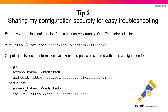The second tip is how to extract your running configuration from a given host running the OpenTelemetry collector. We can use a curl command, and the great thing is that it redacts secure information like tokens and passwords, in the event that you want to share this with other engineers for easy troubleshooting. You can see in the example that the access tokens are both redacted for each section within the configuration file.